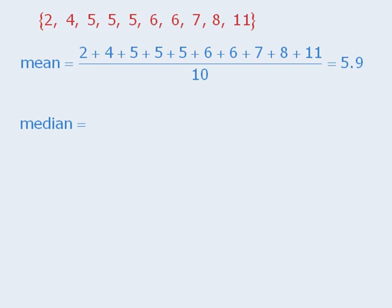Next we'll calculate the median. Since the 10 numbers here are already arranged in ascending order, we'll find the two middle-most numbers, and then find their average to get a median of 5.5.